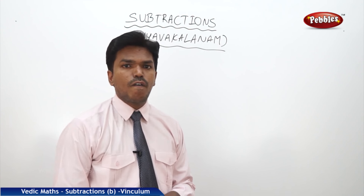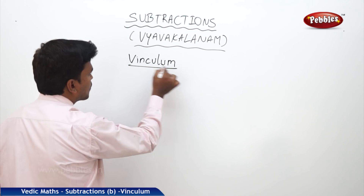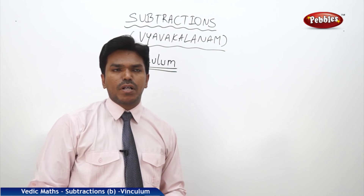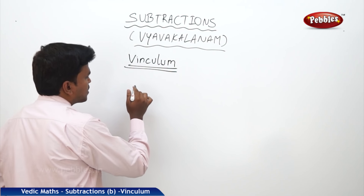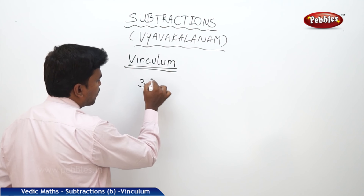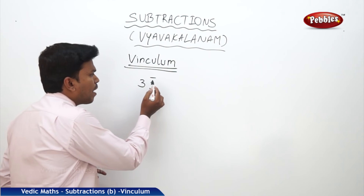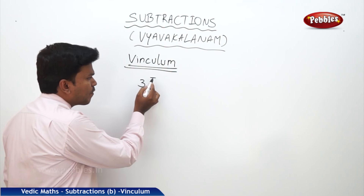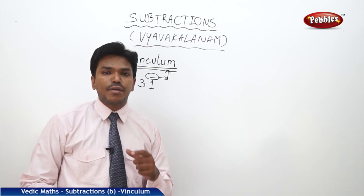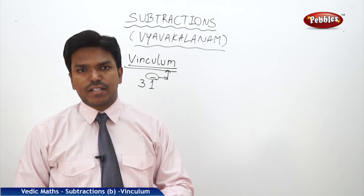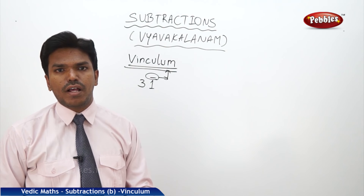One more part of the basics for subtraction is vinculum. So, what is the use of vinculum and how it can be established? Suppose a number is like this: 3, 1 bar. This is not a normal number. The bar written above the number is known as vinculum. In subtraction, this vinculum bar represents a negative value. That means the 1 is not a positive 1 here — it is a negative 1. The part without the bar is a positive 3.